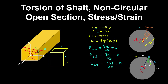Now we obtain the shear strains, first in the XY plane. That is the partial derivative of U with respect to Y, plus the partial derivative of V with respect to X. The partial derivative of U with respect to Y is minus theta Z, and the partial derivative of V with respect to X is plus theta Z, so there is no shear strain in the XY plane.